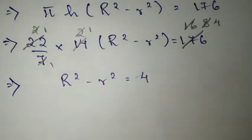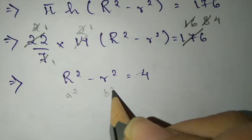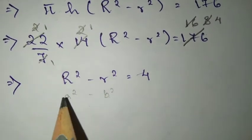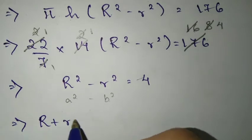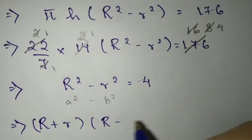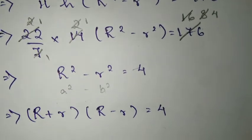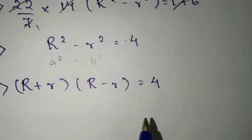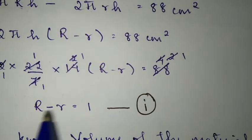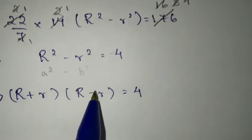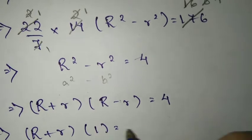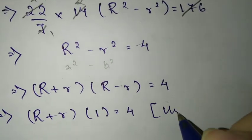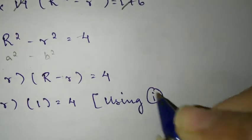Now, R² - r² is an algebraic identity. A² - B² equals (A + B)(A - B). So we have (R + r)(R - r) equals 4. Now, R - r from equation 1 is 1, so we can substitute that. We have (R + r) times 1 equals 4, using equation 1.